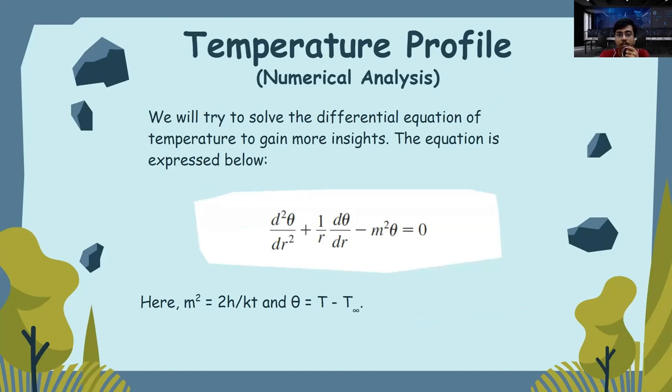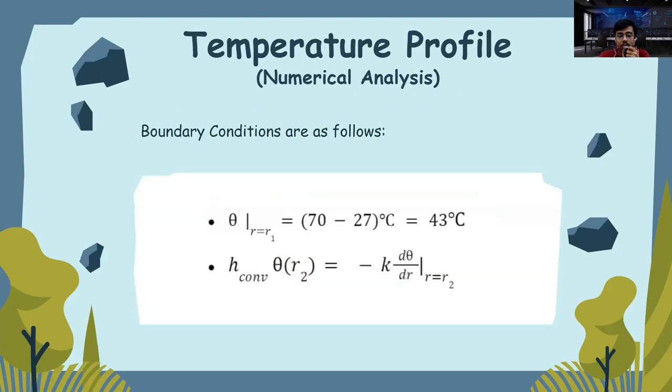Now, we will estimate the qualitative, quantitative temperature profile using numerical analysis. We will solve the differential equation d²θ/dr² + (1/r)(dθ/dr) - m²θ = 0. So, these are the boundary conditions. At r = r1, we have θ = 43 degree Celsius and at r = r2, we have the convective heat transfer condition, which is h_convective × θ(r2) = -k(dθ/dr) at r = r2.